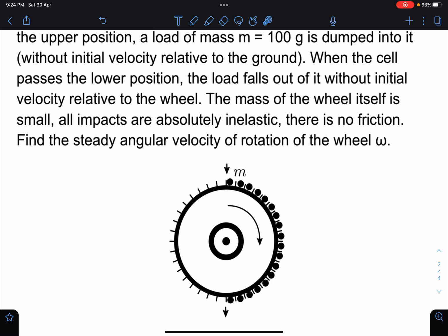The mass of the wheel itself is small and all impacts are absolutely inelastic. There is no friction. So we have to find out the steady state angular velocity of rotation of the wheel, which is omega.